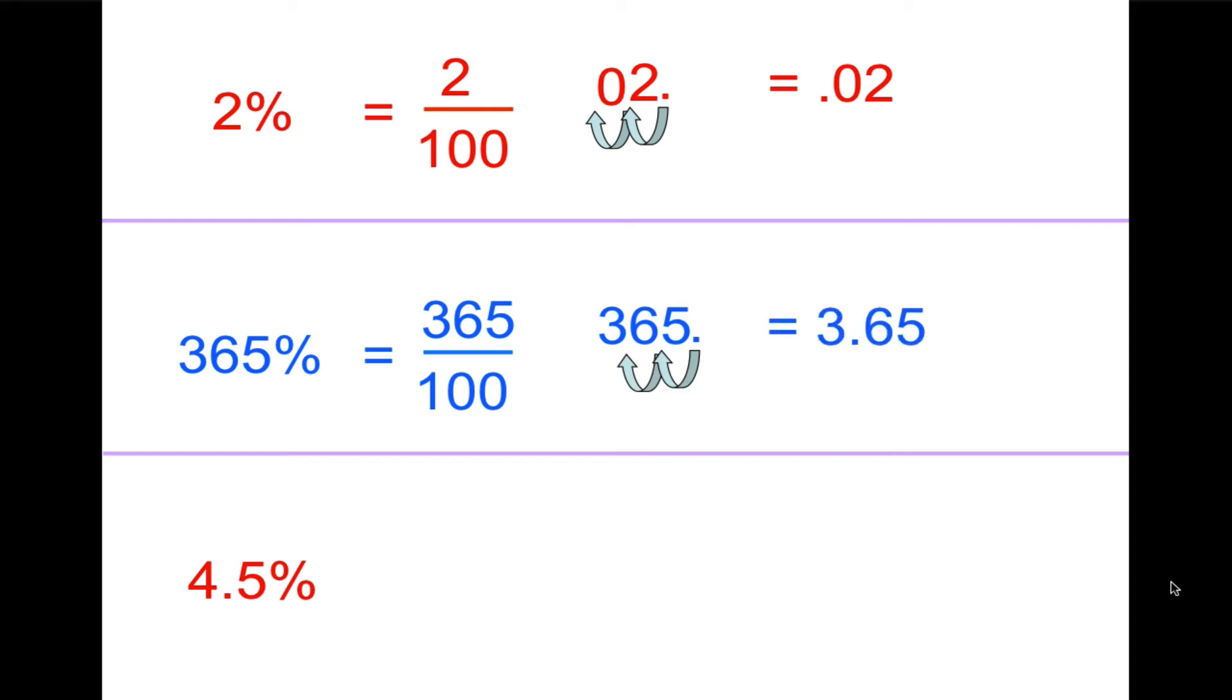And the last example here, we have 4.5%. So 4.5 over 100. When we move the decimal twice to the left, again we're going to put an egg in the carton. This would be 0.045.